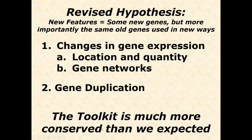Originally, researchers thought a mouse would have a very different genetic toolkit than a fruit fly, and that a mouse would even have a very different toolkit than a human. However, as toolkit genes were discovered and described, there was a massive amount of conservation — flies are very, very similar to mice, much more than expected, and mice are incredibly similar to humans and other mammals. This created a paradox: how can organisms have largely the same toolkit yet look so incredibly different?